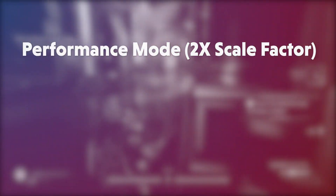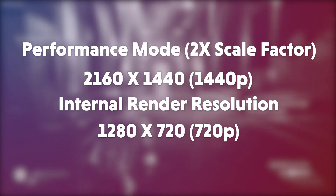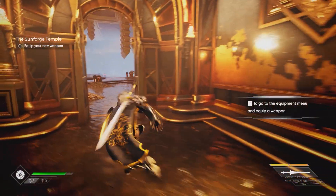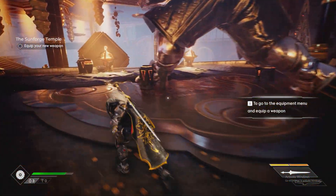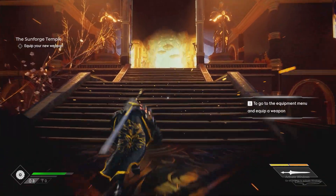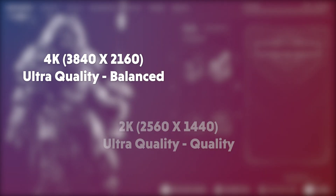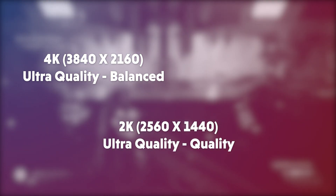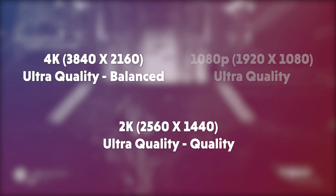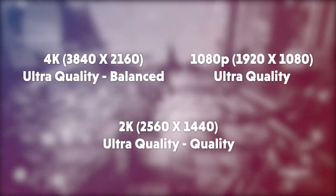It's only when you go lower than 4K and enable FSR that you really start to see the quality take a hit. For example, Performance mode in native 1440p has an internal resolution of 1280×720 — standard 720p — and that's definitely a little rough around the edges. For recommended settings: in 4K, use anything from Ultra Quality down to Balanced. For 2K or 1440p, use Ultra Quality or Quality. And for 1080p or less, always use Ultra Quality to get the best visual fidelity possible.